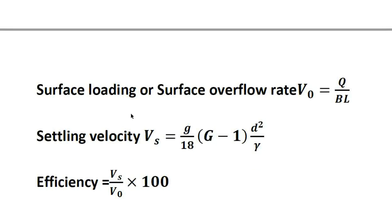Settling velocity is based on Stokes' law. The settling velocity equation is: Vs = (G/18) × (G−1) × D² / ν, where G is specific gravity, D is particle diameter, and ν is kinematic viscosity.